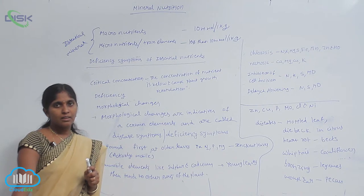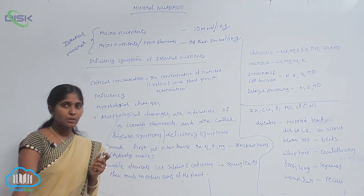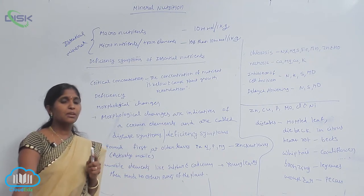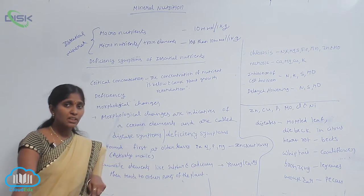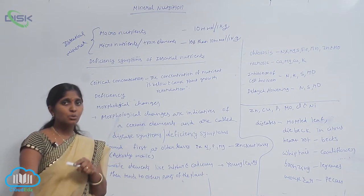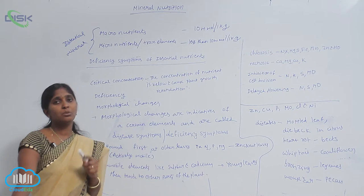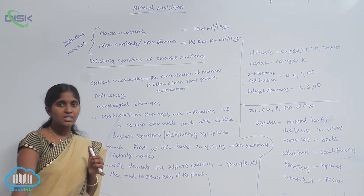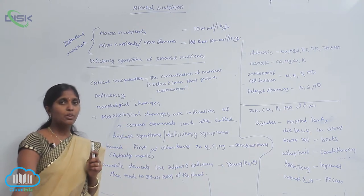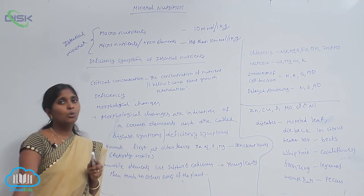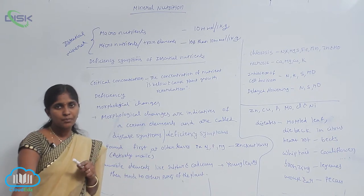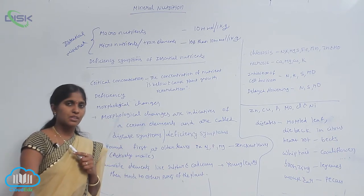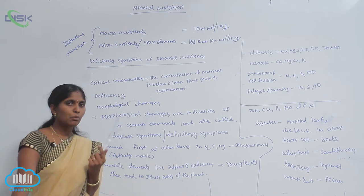Then only younger leaves. The reactions mediated by specific ions can break down, then the symptoms are shown on the younger leaves. It means mobile nutrients deficiency is found first at older leaves, then only younger leaves. But what about immobile?